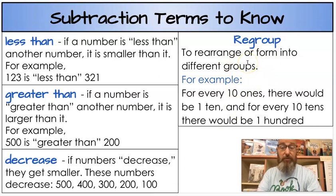Regroup, and we've used regrouping a lot this week. When you regroup you rearrange or you form into different groups. For example, for every 10 ones there's 1 ten. Vice versa, for every 1 ten there's 10 ones. And for every 10 tens there's 1 hundred. Same thing, for every 1 hundred there's 10 tens. Make sure we know that because you need to know this to be able to solve subtraction questions within a thousand.